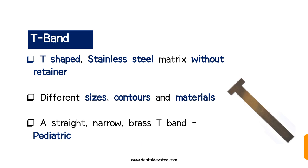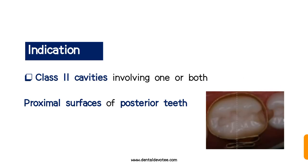The T-band is a T-shaped stainless steel matrix without any retainer, and it can be made of different sizes, contours, and materials. A straight and narrow stainless T-band is used in pediatrics. It is indicated whenever we are working with class 2 cavities involving one or both proximal surfaces of posterior teeth, as you can see in the diagram.